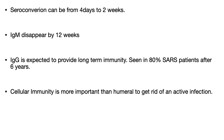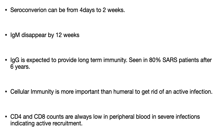Cellular immunity is more important than humoral immunity in an active infection. CD4 and CD8 counts are always low in peripheral blood, especially in severe infection, because they are actively recruited to infected sites — predominantly the lungs. What we find is lymphocytopenia and an increase in neutrophil counts.